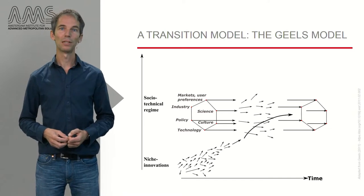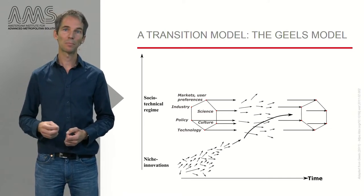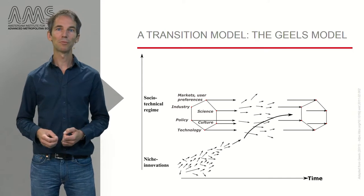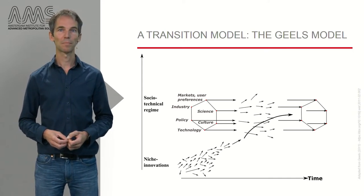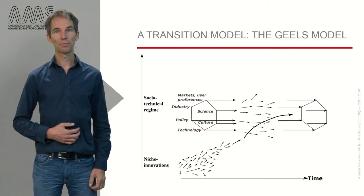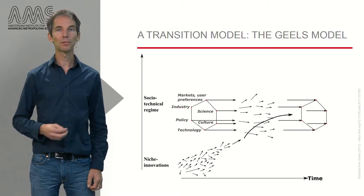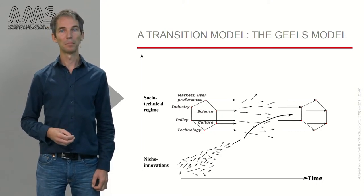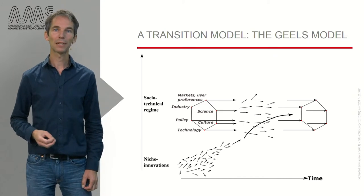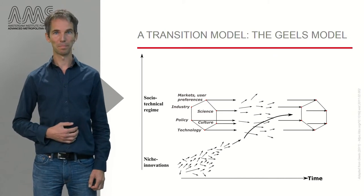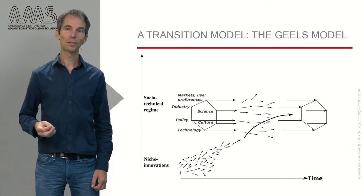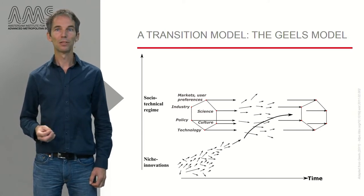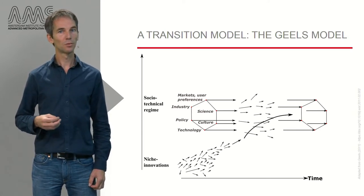Subsidies for innovation, tax exemptions, exemptions of rules and regulations — all of these may be forms of protection of a niche. Many of such projects fail, as you can observe in all the arrows not making it. But some may scale up, mature and manage to make a crack in the current regime. It is through these cracks and the adoption of novelties that eventually the regime will change into a new regime.